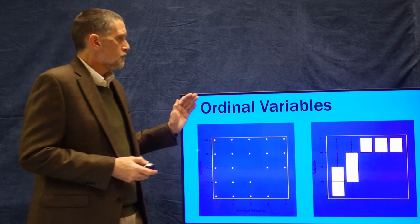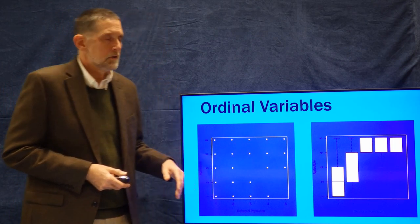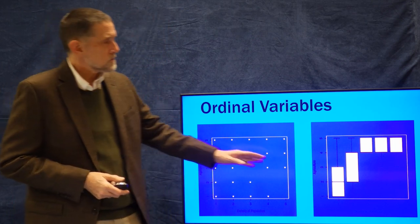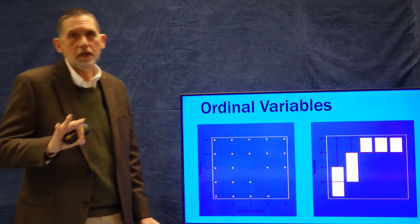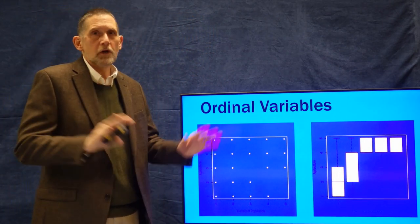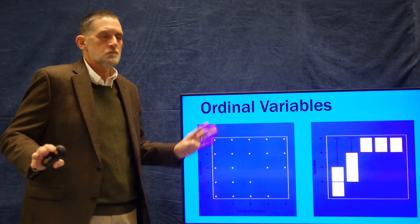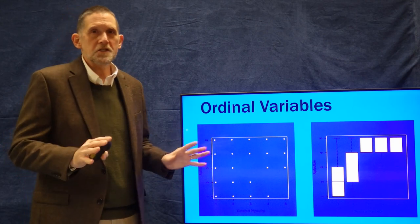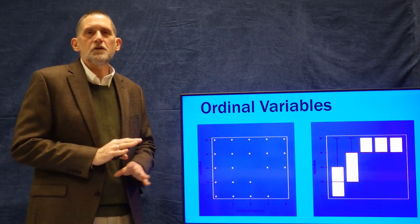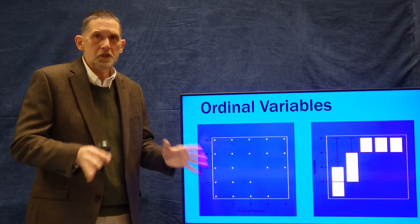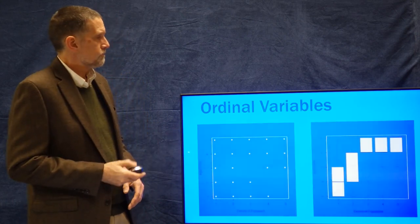So for ordinal variables, like dichotomous variables, box plots are a better way to look at correlations. For interval variables, scatter plots are the tool of choice - and as I said, I love scatter plots because they tell you so much visually about the data. That's all for today; we'll see you later.